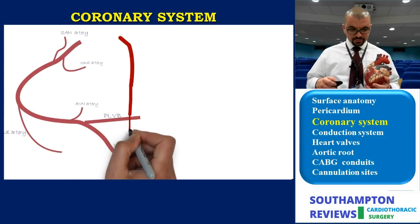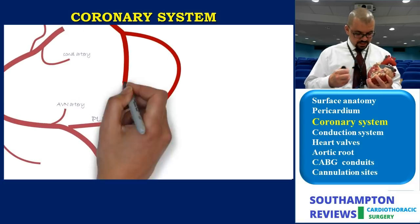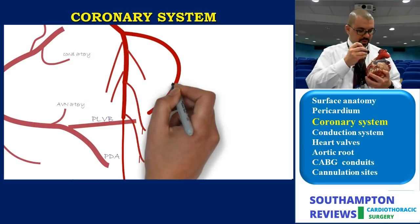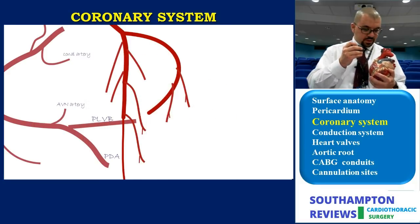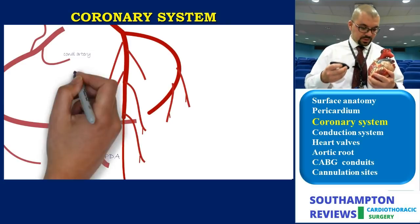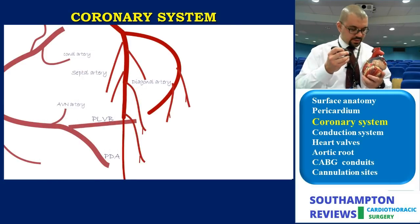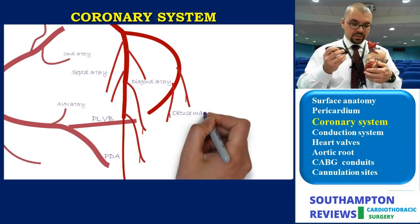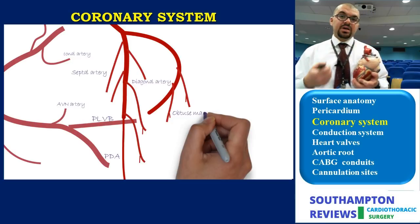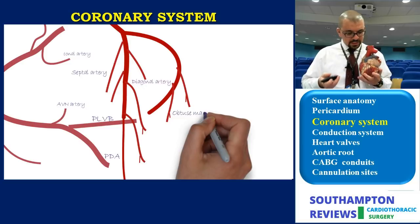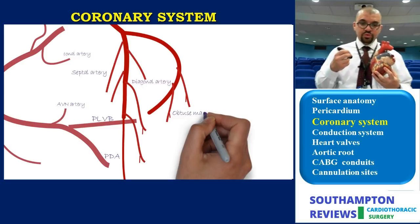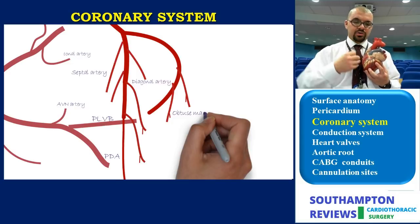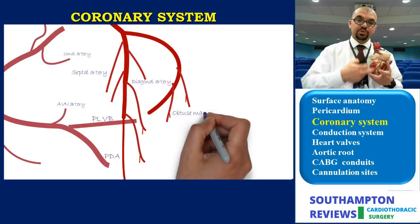The left coronary system begins with the left main stem, originating from the left coronary sinus, traveling behind the pulmonary artery and emerging just underneath the left atrial appendage, then dividing into the left anterior descending artery (LAD) and the circumflex artery. The circumflex travels all the way back to a variable distance behind the heart. The LAD gives two sets of branches: diagonal arteries on the lateral side and septal arteries; the circumflex gives off the obtuse marginals.